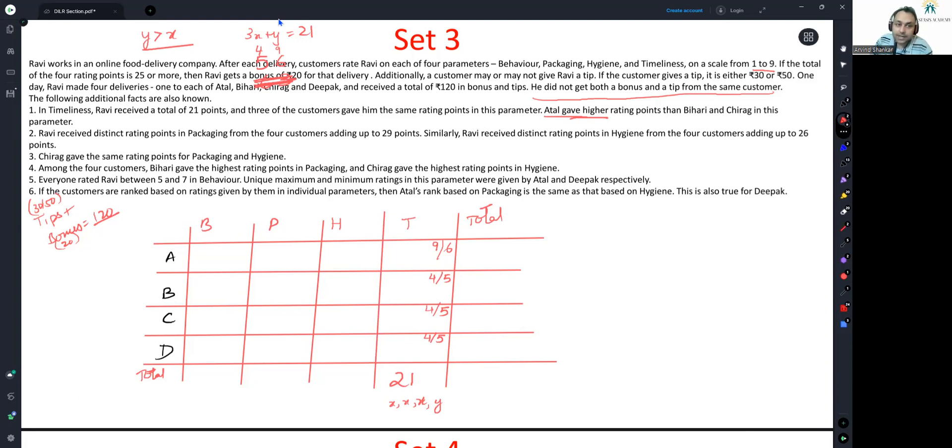Ravi received distinct rating points in packaging from the 4 customers, adding up to 29 points. Similarly, Ravi received distinct rating points in hygiene from the 4 customers, adding up to 26. Now, this 29 is interesting. If you want to create 29 with 4 distinct numbers, the only way you can do it is 9, 8, 7, and 5. There is no other way in which you can create 29.